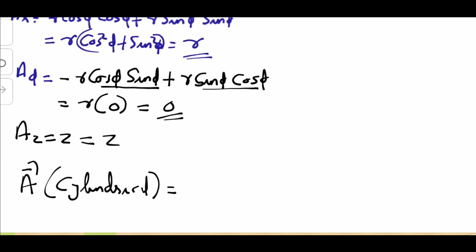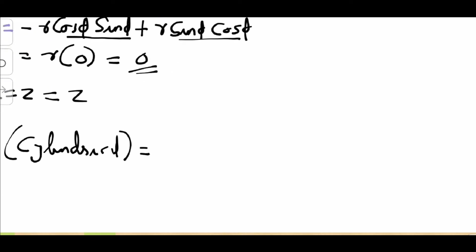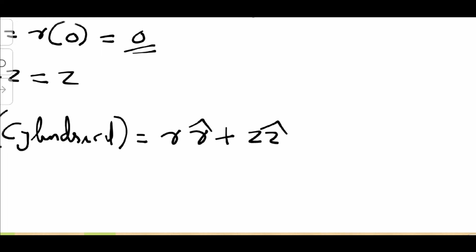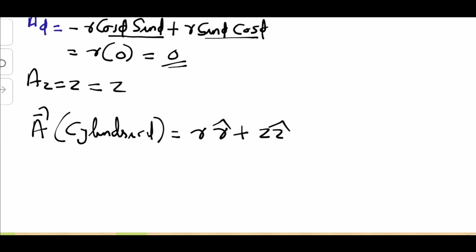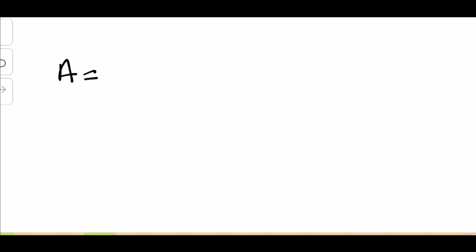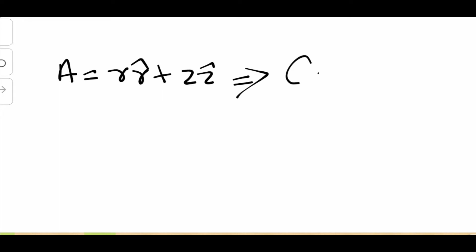Therefore, vector A in cylindrical coordinates is R r̂ + Z ẑ. That's the vector transformed from the Cartesian XYZ representation into cylindrical form. Now let's return this vector back to the Cartesian coordinate system.